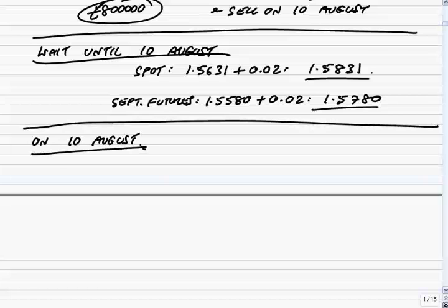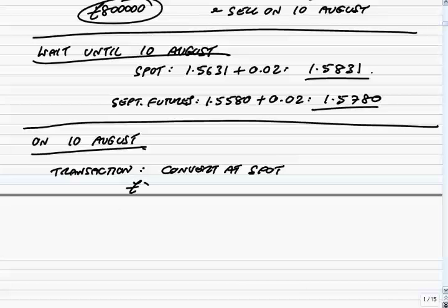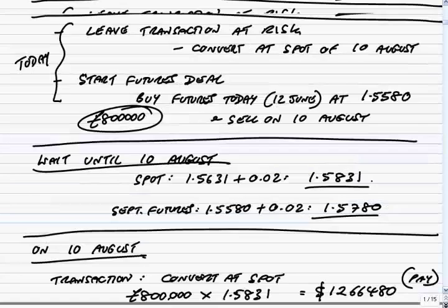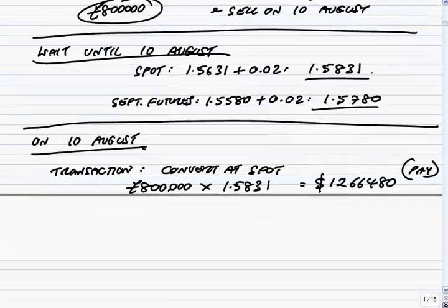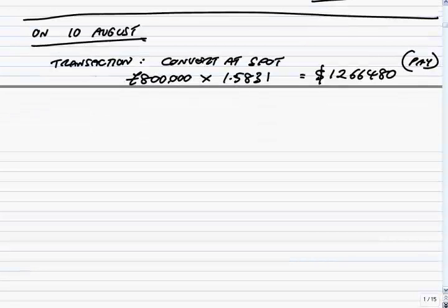Now let's see what happens on the 10th of August — there are two separate things. First of all, the transaction itself: remember we've left it at risk, so we'll convert at spot. We were converting £800,000 at the spot rate, which has gone to 1.5831. So we'll have to pay out $1,266,480. Of course, we've lost out — at today's rate it would have been $1.25 million, but the rate's gone against us and we're paying $1.26 million.